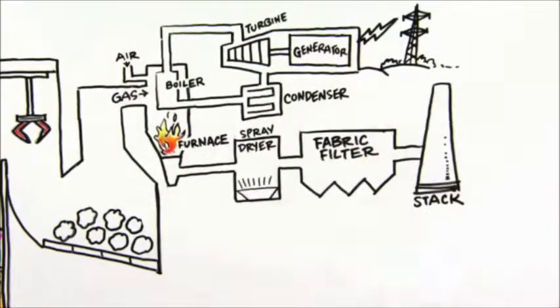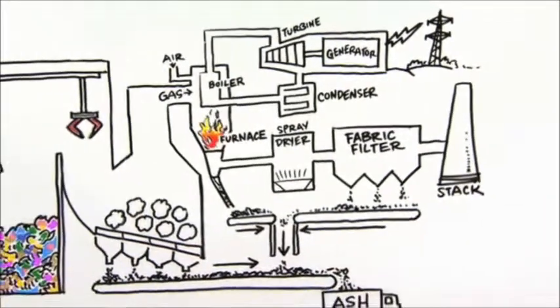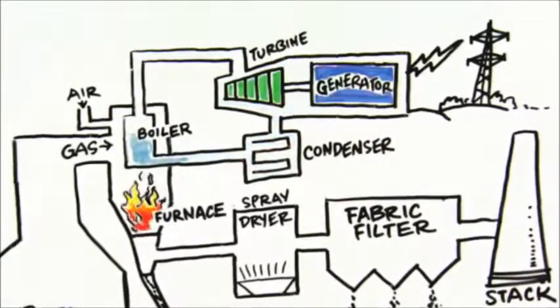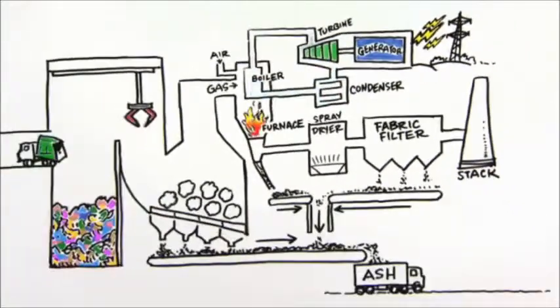Those gases exit the gasification chamber and are sent to a furnace and boiler, where they can be burned cleanly, producing less soot and other pollution than conventional combustors. The boiler makes steam to run a turbine that generates electricity.